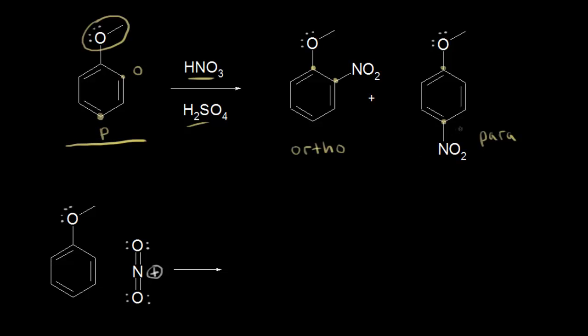Between the ortho and the para product, the para product is the observed major product in the nitration of methoxybenzene, and the ortho product is the minor product. This has to do mostly with steric hindrance — the methoxy group has some steric hindrance, which would prevent the nitro group from adding onto the ortho position easily. The para position has much less steric hindrance, and that's the reason you usually see the para product as the major product for this reaction.